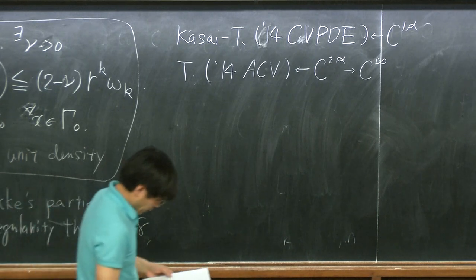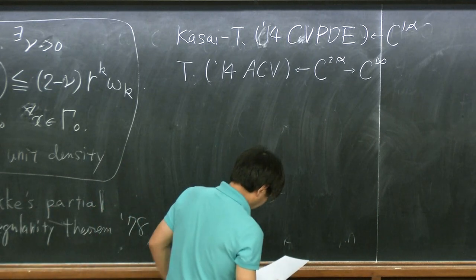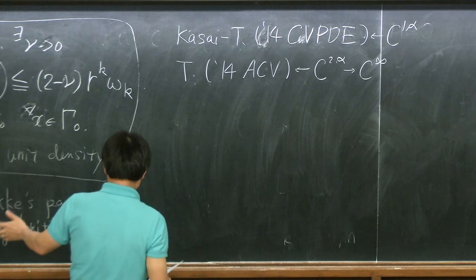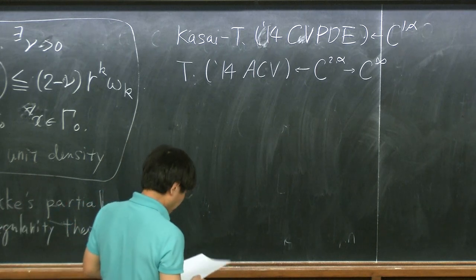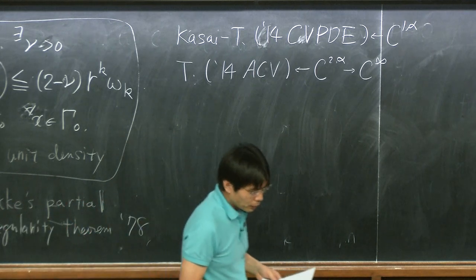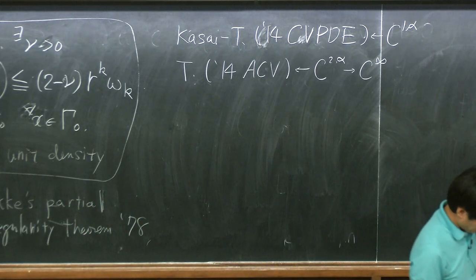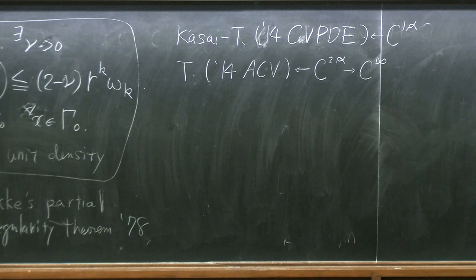This is C1-alpha regularity theory, and then I extend it to C2-alpha, again in Calculus of Variations. This is C2-alpha, and once you get to that, then you get to C-infinity. So these two papers really gave a clear, complete proof of this. I don't have time to explain this whole proof, but I want to point out a few elements of this regularity theory.